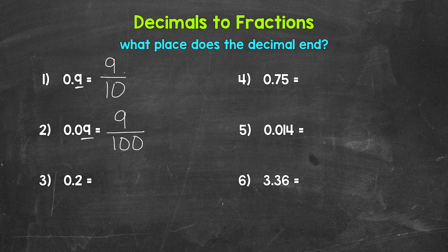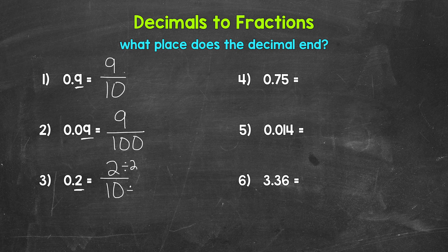Moving on to number three, we have 0.2 — two-tenths. Two is going to be our numerator, and this decimal ends in the tenths place, so 10 is going to be our denominator. So two over 10, two-tenths. This fraction is correct, but we can simplify here. We have a greatest common factor of two that we can divide the numerator and denominator by. Two divided by two is one, and ten divided by two is five, so we get one over five — one-fifth. The only common factor between one and five is one, so this is in simplest form.